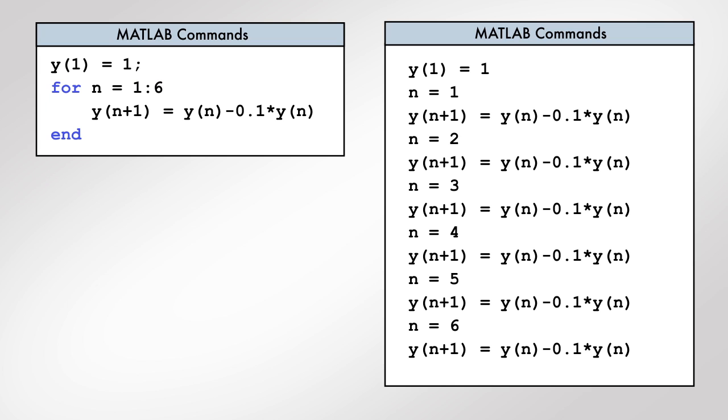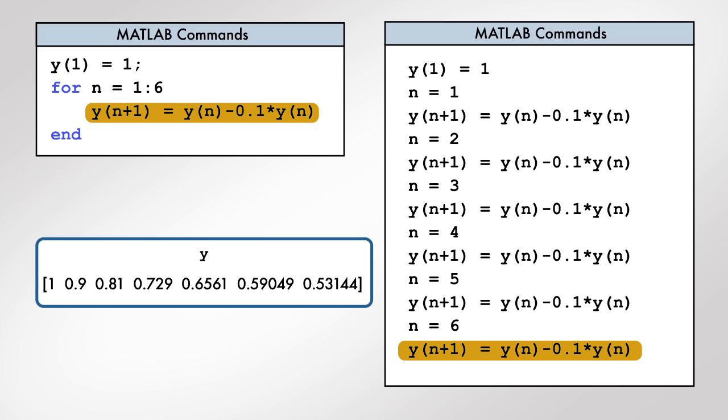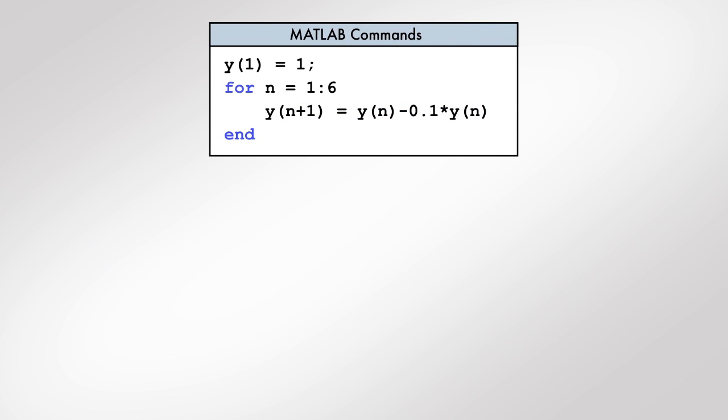For example, this code uses a for loop to compute the same vector as the set of commands on the right. Let's examine the for loop more closely.